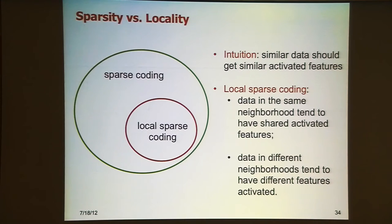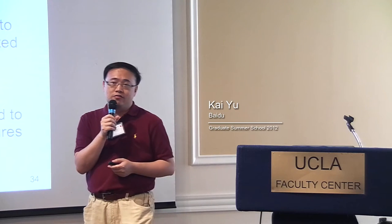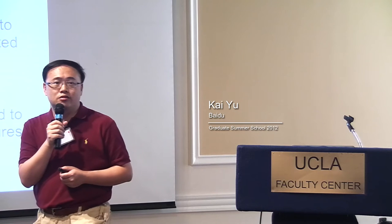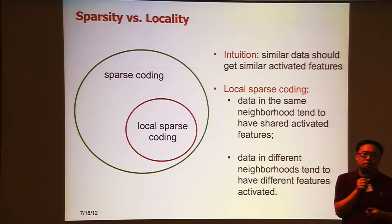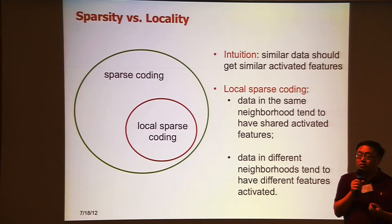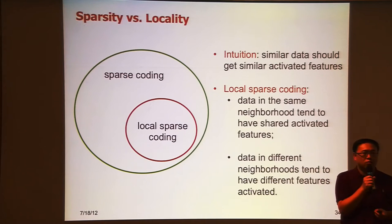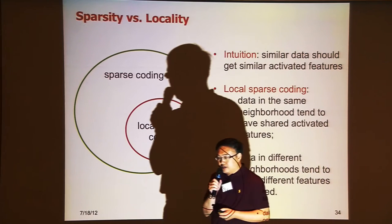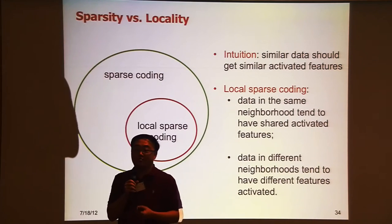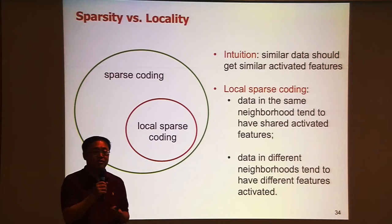Let's discuss sparse coding. What is it by intuition? What is the ideal sparse coding feature representation you want to get? By definition, sparse coding gives you a sparse representation of data, so each data point gets different dimensions activated in a new representation. But by intuition, we also want, in the ideal case, similar data points to get similar dimensions activated.